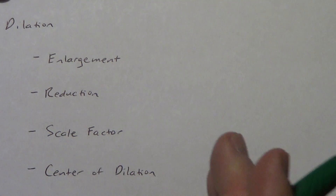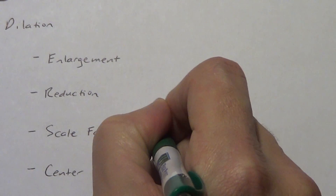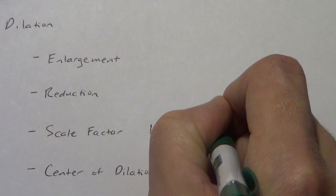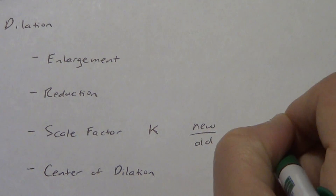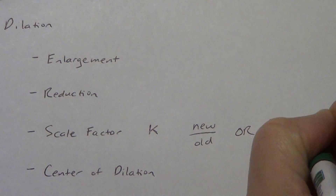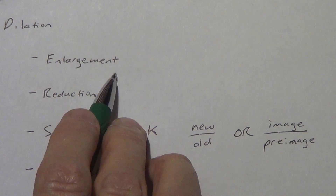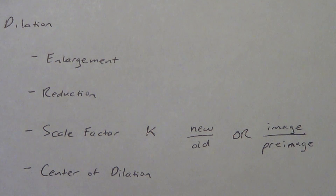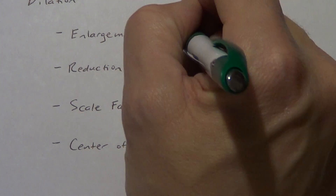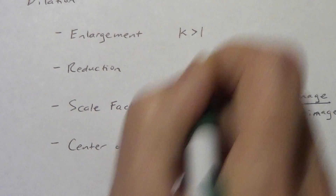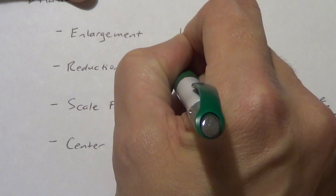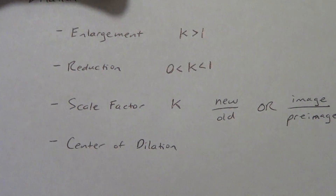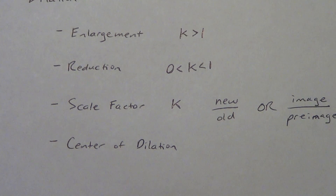Let's start with scale factor. Remember, we called scale factor K, and the way we found K was new over old — or what we often call the image over the preimage. An enlargement meant that our shape got bigger, and K was greater than one. For a reduction, K was less than one, but we also said it was greater than zero. If you multiply everything by zero, you don't have anything left. And if you multiply by a negative, we get negative distances, which doesn't make sense either.